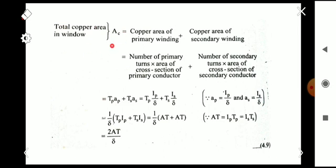We are going to find the total copper area in the window, A_c. It can be found using: copper area of primary winding plus copper area of secondary winding. The copper area of the primary winding is found by multiplying the number of primary turns T_p by the cross-sectional area of each primary conductor A_p. Similarly, the total copper area of the secondary winding is T_s × A_s. So A_c = T_p × A_p + T_s × A_s.